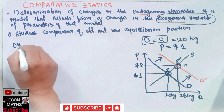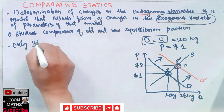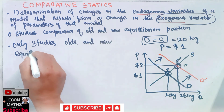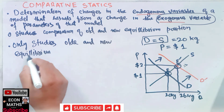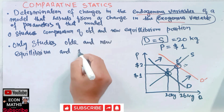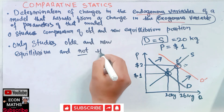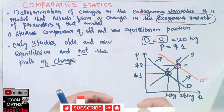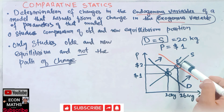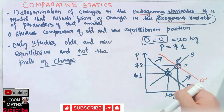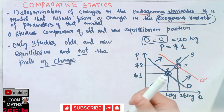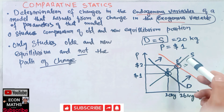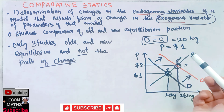It is important to remember that comparative statics only studies the old and new equilibrium — and not the path of change. It only studies and compares the old and new equilibrium positions, and doesn't actually tell us how the change occurred or how we got from one equilibrium to the other.